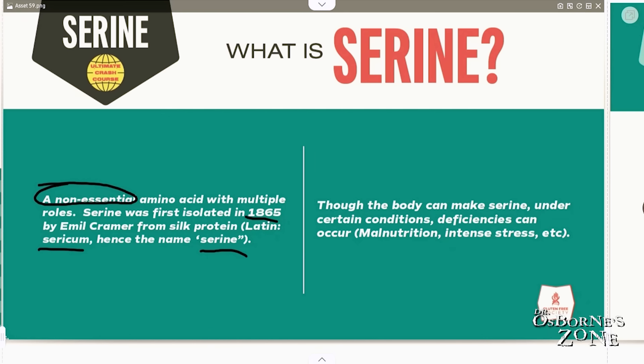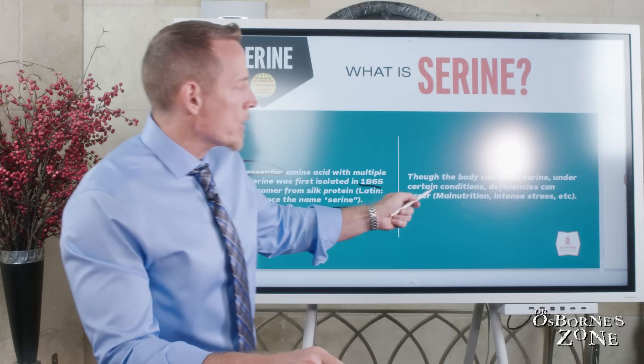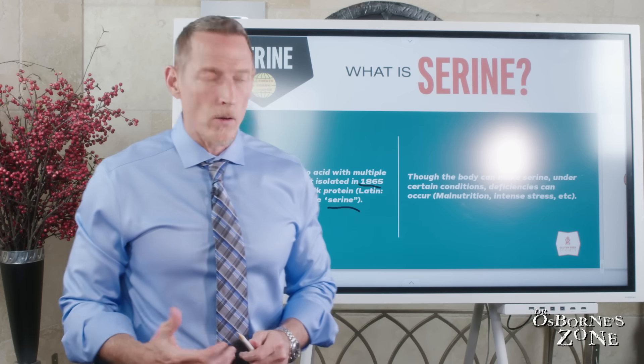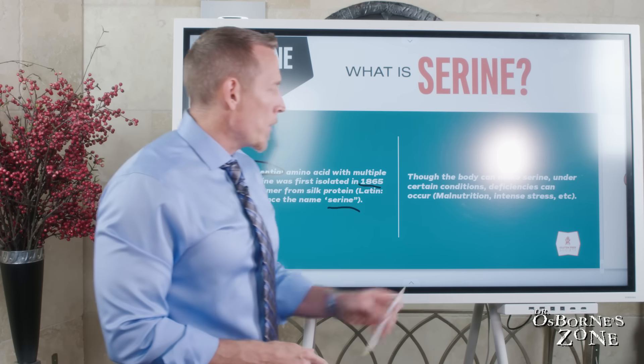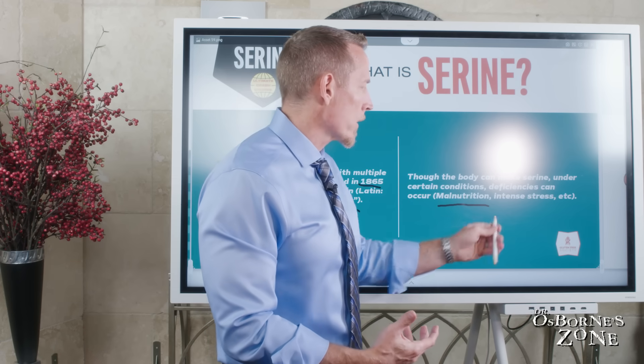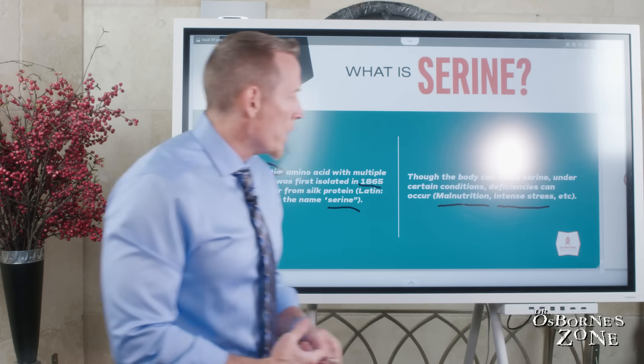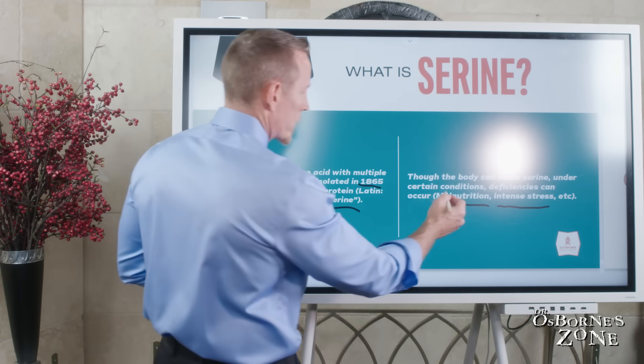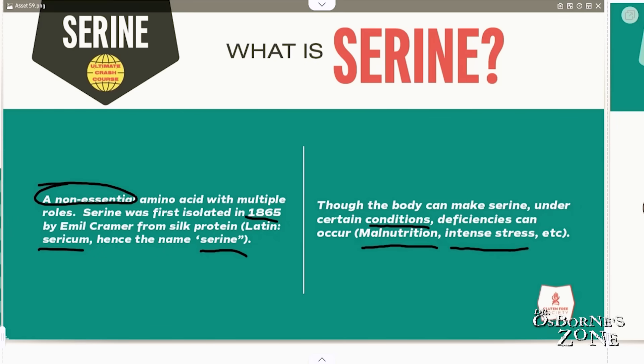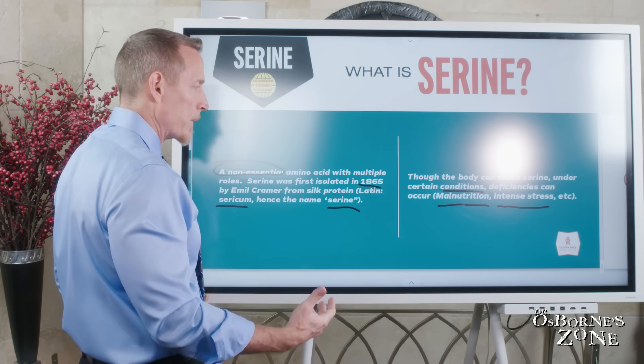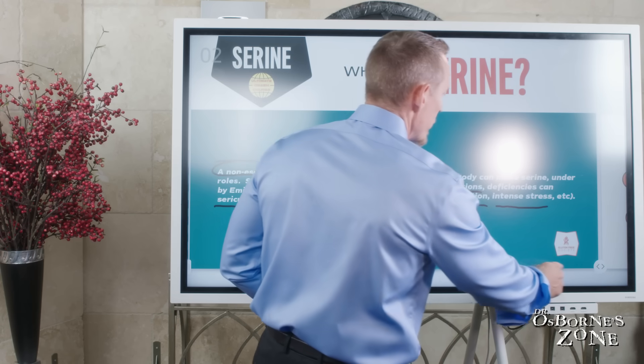Now the body can make serine. Under certain conditions, however, deficiencies can occur. When people have generalized malnutrition, they're not eating enough total protein calories, when they're under intense stress, this amino acid becomes what's known as conditionally essential. So our body can produce serine, but under certain conditions, our body needs to get more serine from the diet, and this is where supplementation or increased dietary intake may become necessary.